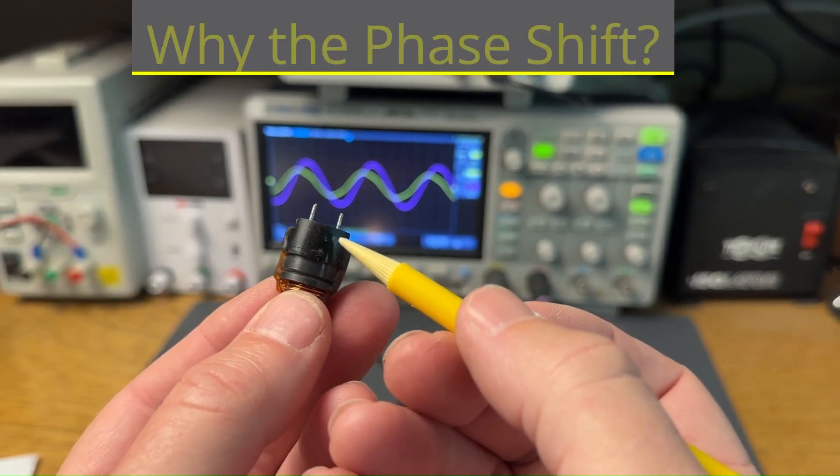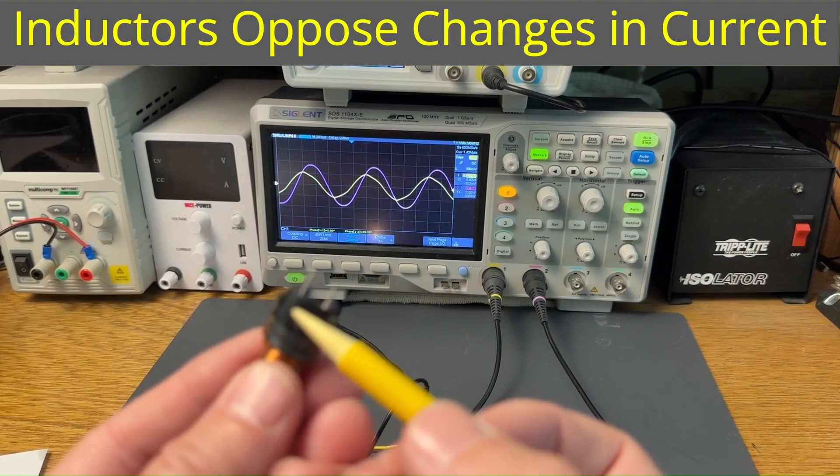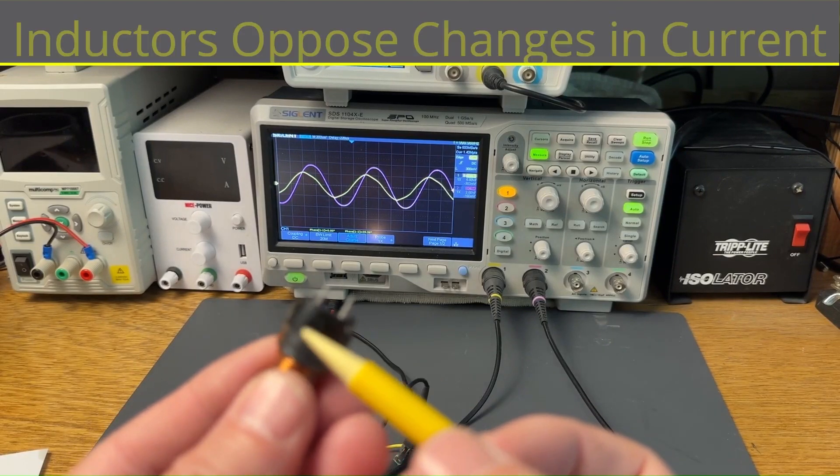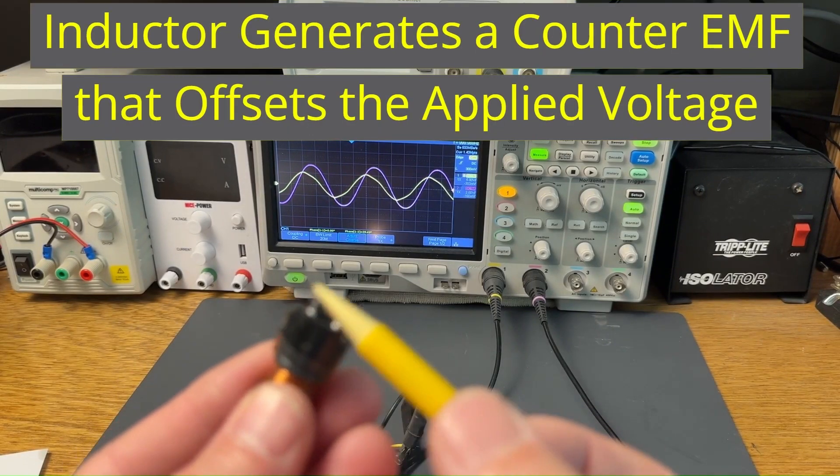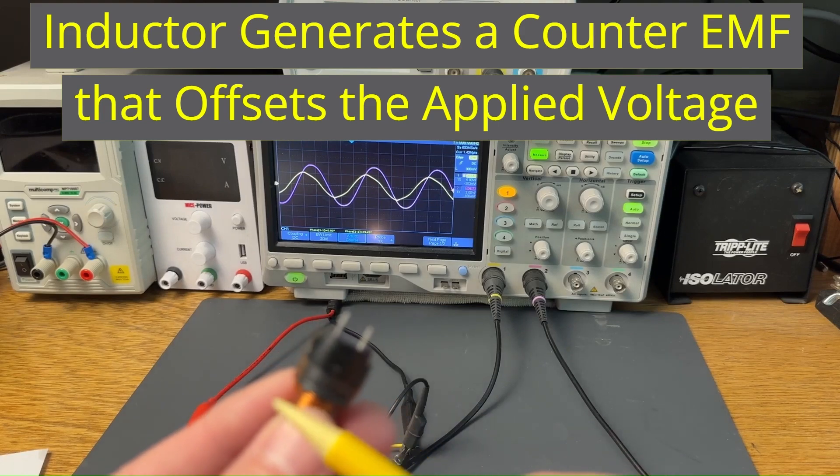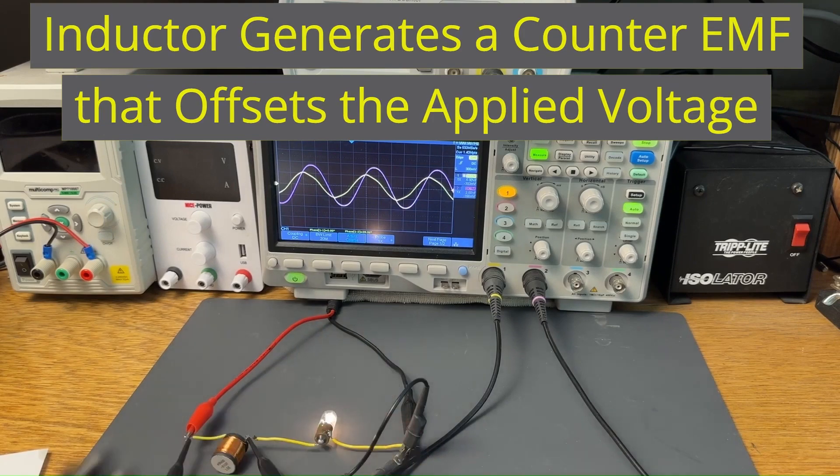As mentioned, inductors oppose changes in current. When voltage is first applied, the inductor temporarily opposes the rising current by generating a counter-EMF. So even though the voltage is rising, the current lags behind as the magnetic field builds.